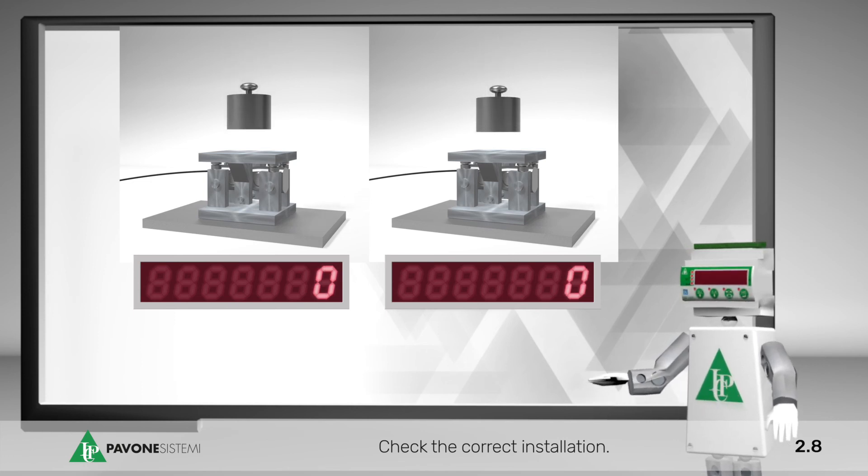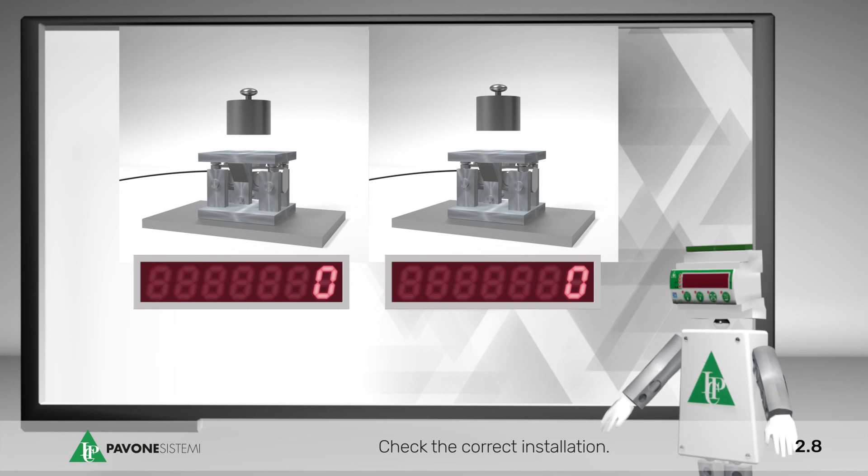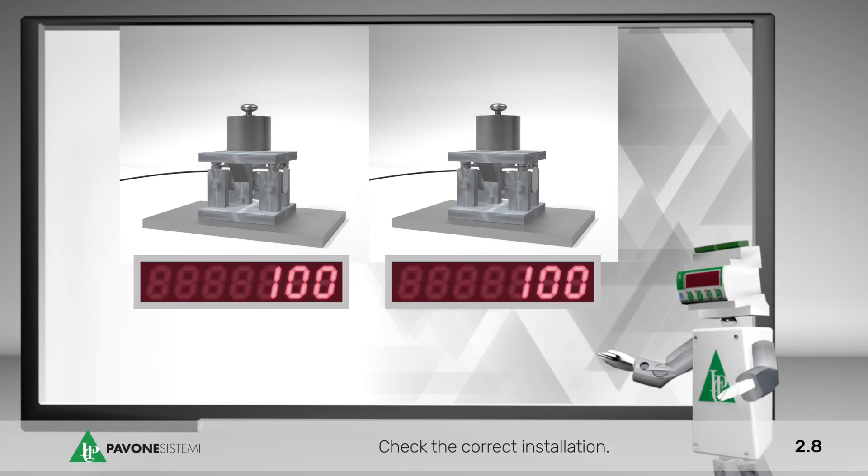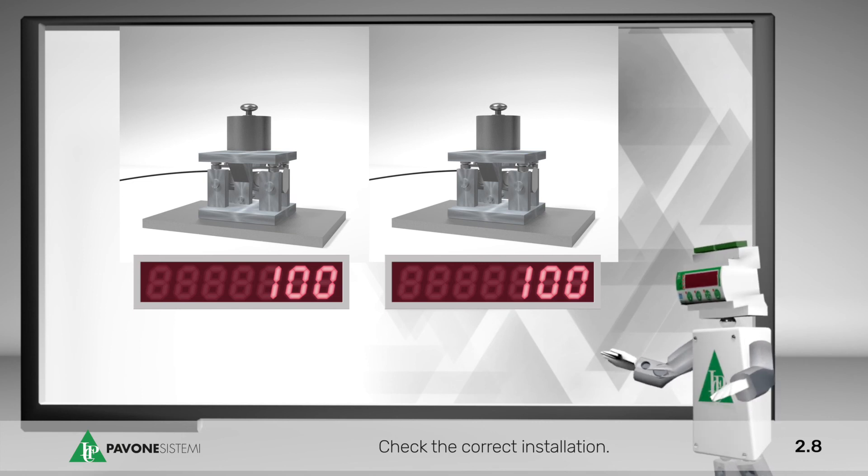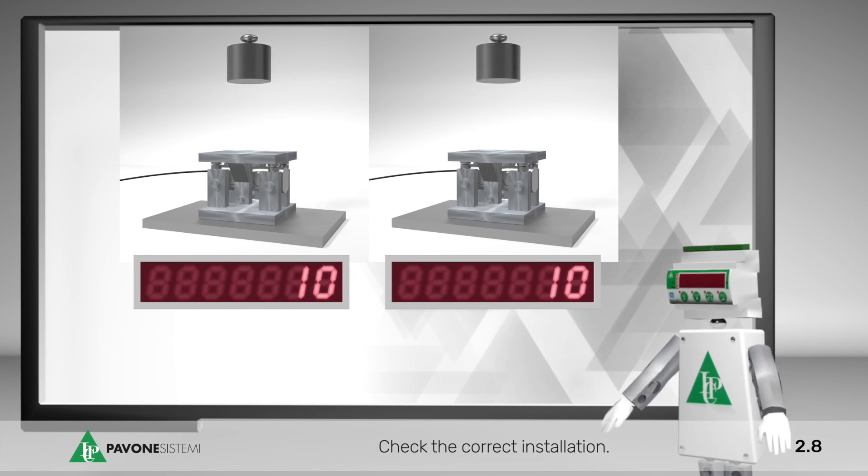In case of a weighing system with several load cells, repeat this operation in correspondence of each load cell. Load and unload each cell, applying a known load and check that the value indicated in the display is steady and repetitive in relation to all points.